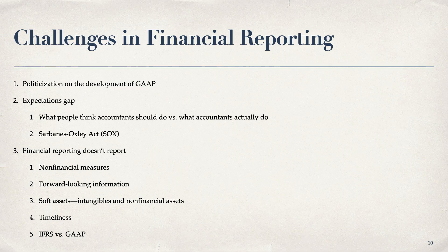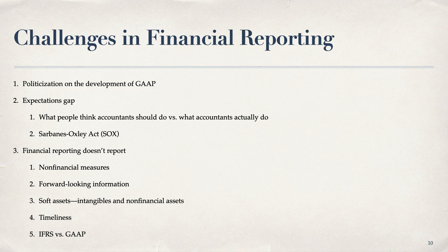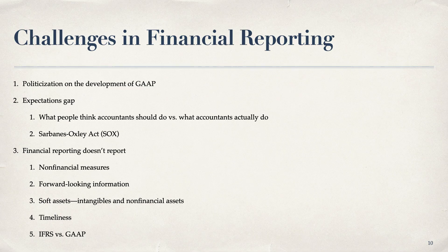One act that tried to reduce the expectations gap is the Sarbanes-Oxley Act, to help improve financial reporting. A third challenge is that financial reporting does not report several things, such as non-financial measures — because accounting uses financial metrics. It does not provide forward-looking information like forecasts and budgets. It is typically backward-looking. It also doesn't really report soft assets, like the value of an intangible such as a copyright or trademark — we don't value that trademark in a purely economic way. It also doesn't report non-financial assets.